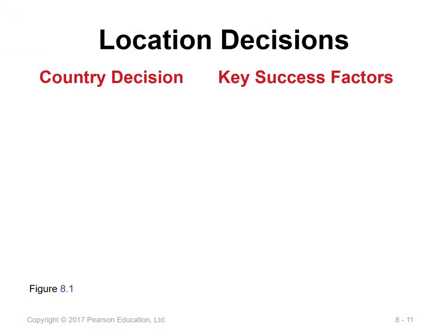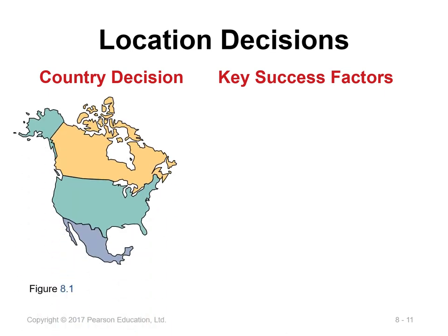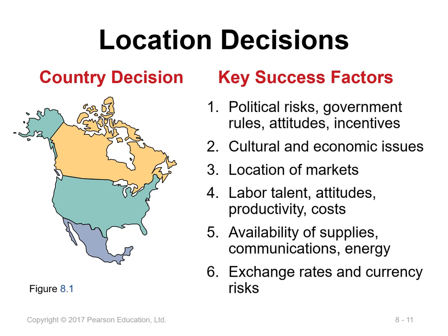One approach to selecting a location sequence often begins with choosing a country in which to operate. To identify the best country, the parent organization identifies key success factors needed to achieve competitive advantage. There are six possible key success factors to consider when selecting a country, and sometimes organizations can also use negative factors such as crime rate to help make a decision about which country to open their new business in.